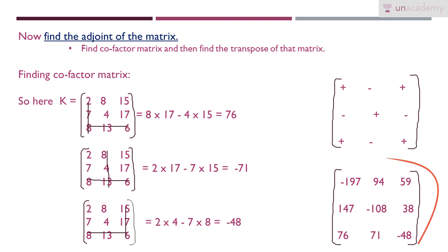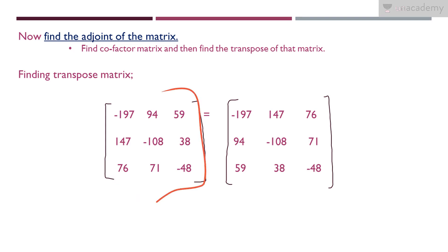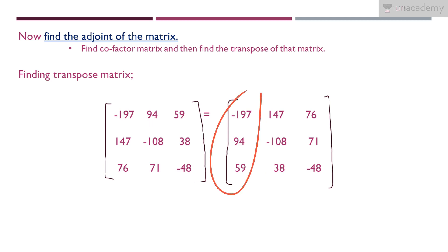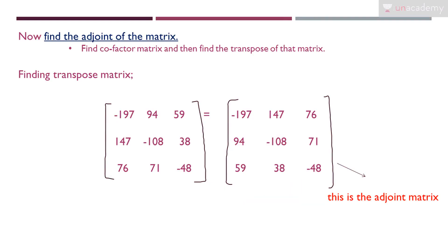To find the adjoint, we now take the transpose of the cofactor matrix — just interchange the rows and columns. The first row [−197, 94, 59] becomes the first column, the second row becomes the second column, and the third row becomes the third column. This transpose gives us the adjoint matrix of K.